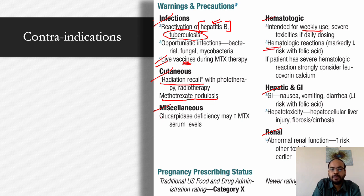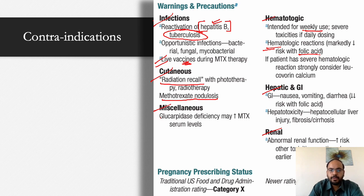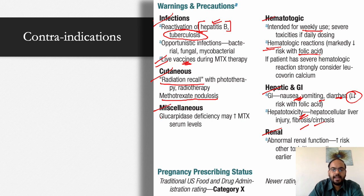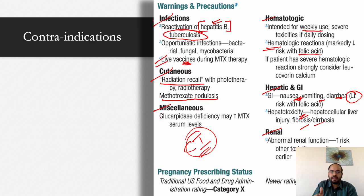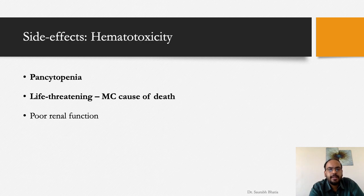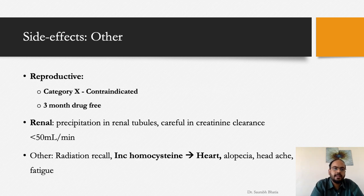Nausea and vomiting are the most common side effects and are decreased by folic acid supplementation. Liver fibrosis and cirrhosis are very important aspects of long-term methotrexate use. Pregnancy rating is category X (older classification); currently we simply state the drug is contraindicated in pregnancy. In viva, mention both: the older rating is category X, but currently it is listed as contraindicated.